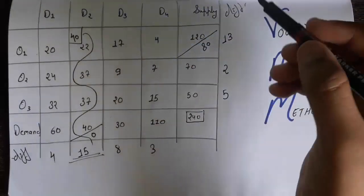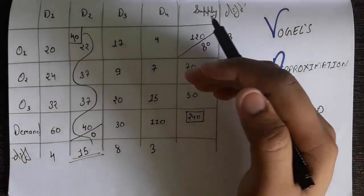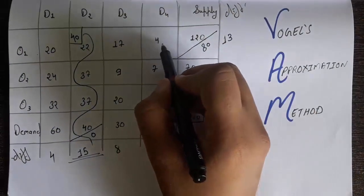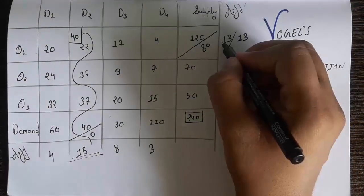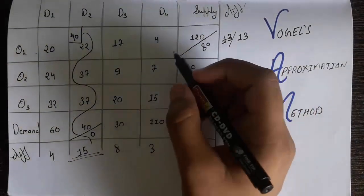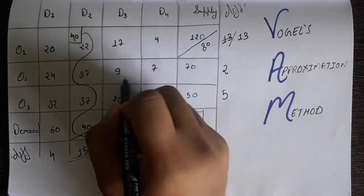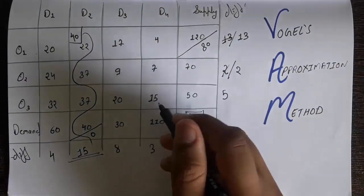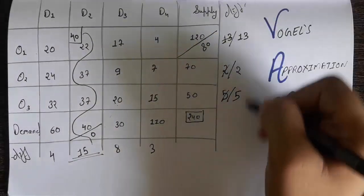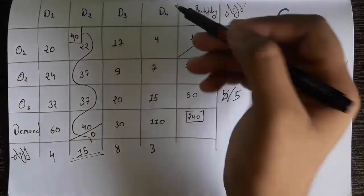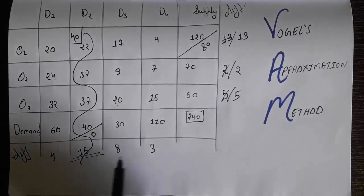Because this column's demand is now 0, we remove the entire D2 column. Since a column was removed, we check whether the row differences have changed. The D1, D3, and D4 column differences remain the same: 4, 8, and 3. The row differences are also unchanged: O1 stays 13, O2 stays 2, and O3 stays 5. Now find the largest difference among the remaining six values — 4, 8, 3, 13, 2, 5 — and the largest is 13.